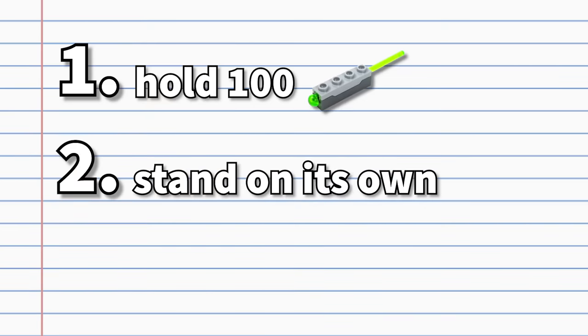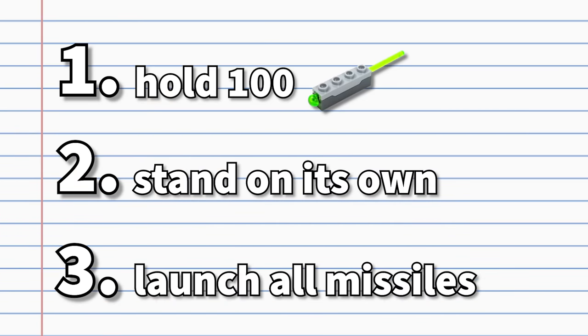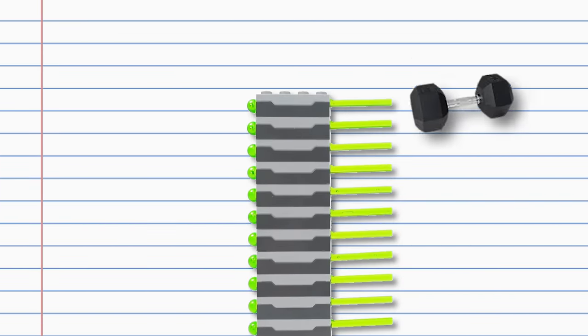Number two, it has to stand up on its own. And number three, the tower must launch all 100 missiles in one go by dropping some sort of weight on the back.